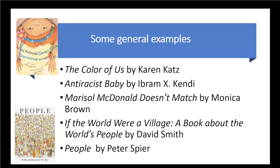Marisol McDonald Doesn't Match is about a biracial Peruvian Scottish-American girl who likes peanut butter and jelly burritos, polka dots and stripes worn together, and overall does not fit into what other people think she should like or do. She tries to change, but eventually decides she likes her mismatched self. The author really is a biracial Peruvian Scottish-American, and this happens to be a bilingual Spanish book.